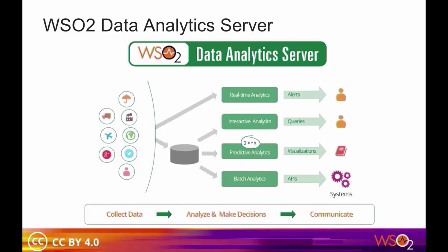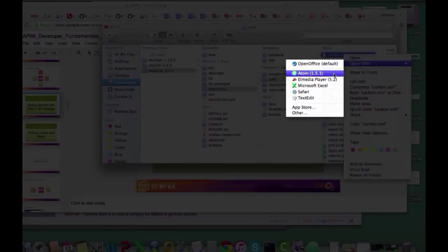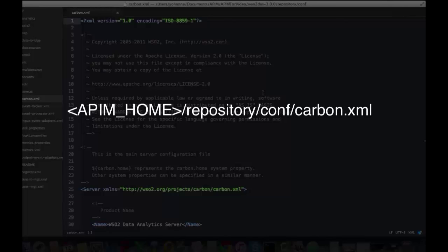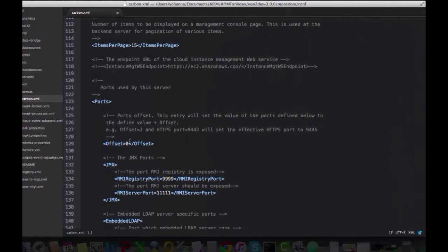WSO2 Data Analytics Server can collect data streams and run them through batch, real-time, interactive, and predictive analysis, then communicate these as actionable insights via APIs, dashboards, alerts, and queries. It is unique in that these analyses can be run simultaneously using data from IoT, mobile, and web applications, giving you the ability to publish data just once and analyze both data in motion and data at rest with the same software. When publishing statistics using the REST API, first configure DAS with a port offset, entered in the API Manager home repository conf carbon.xml file. The port offset increments the default port by a given value to avoid possible port conflicts when multiple WSO2 products run on the same host.